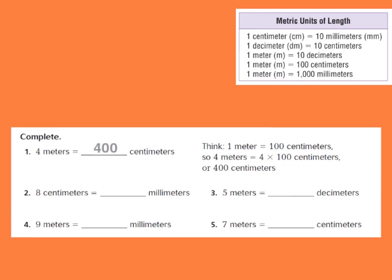We are going to be talking about metric units of length. It is important to understand that metric units are based in tens. One centimeter equals 10 millimeters — millimeters are very, very tiny. One centimeter is about the width of your fingertip. One decimeter equals 10 centimeters. One meter equals 10 decimeters, 100 centimeters, and also 1,000 millimeters.